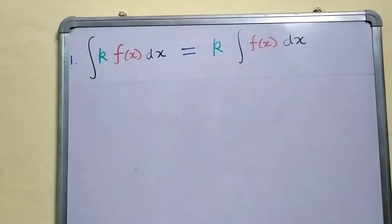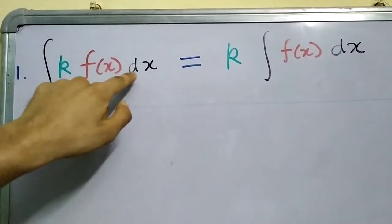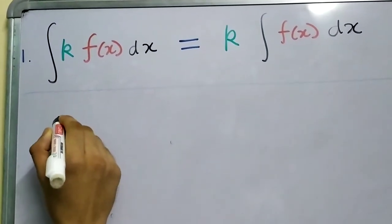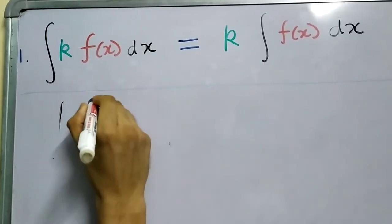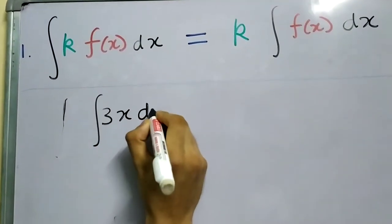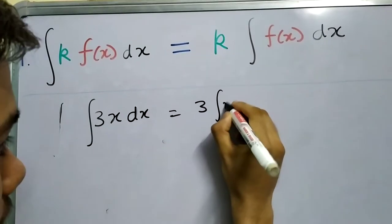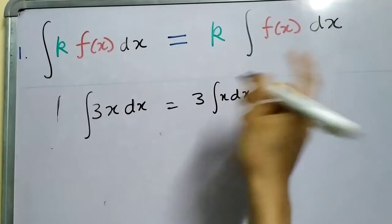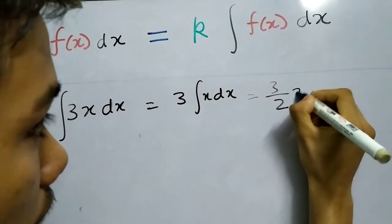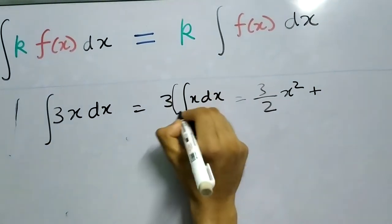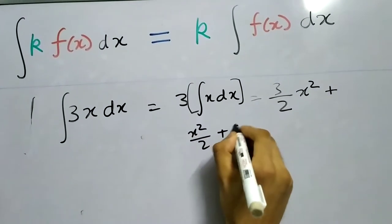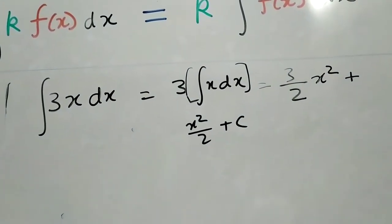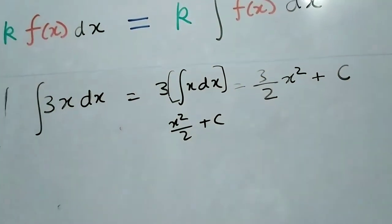Here is the first result: the integral of k times f(x) dx is the same as k times the integral of f(x) dx, where k is a constant. For example, to find the integral of 3x dx, this is the same as 3 times the integral of x dx. The integral of x dx is x to the power 1+1 divided by 1+1, which gives x squared by 2. So we get 3 times x squared by 2, plus c. And since 3 times c is still a constant, we can just write it as c.